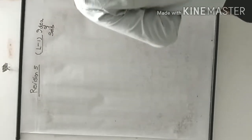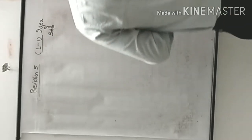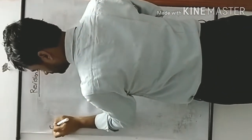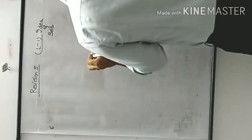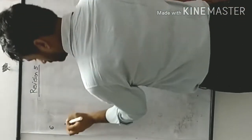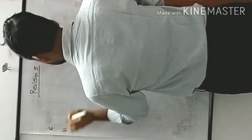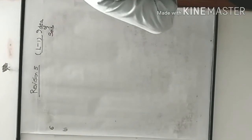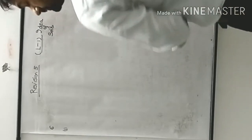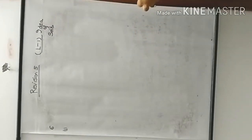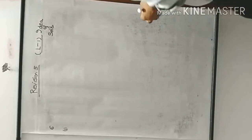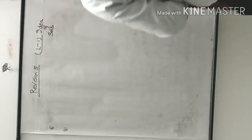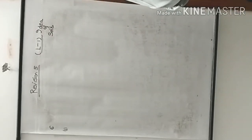Yesterday I told you question number 5. Now question 6, first part says: write the following sets in tabular form. Tabular form is also called the roster method, which means I have to write the elements.